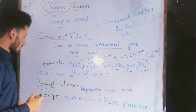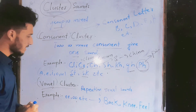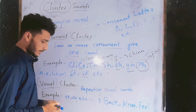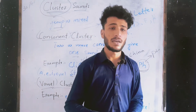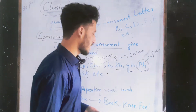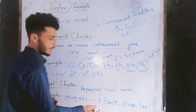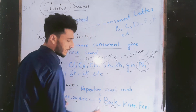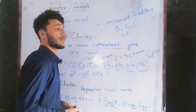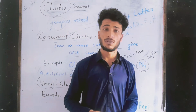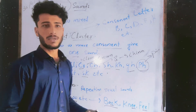Now the other type — vowel clusters — are those clusters that repeat vowels. For example, double 'o' in 'book,' double 'e' in 'knee' or 'fee.' Vowel combinations may also be like 'oa' in 'road.' There are a lot of examples like these.